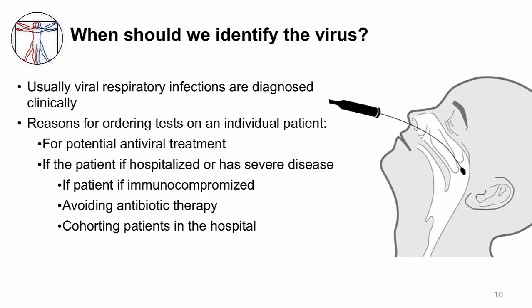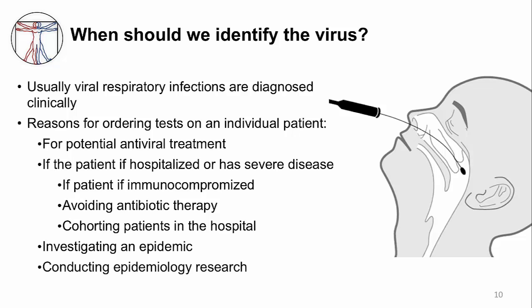A third main reason for identifying a virus is to investigate an epidemic of a respiratory virus. This is important in case the virus found is a new emerging virus. Studies are done on respiratory viruses — the only way we can know about the clinical syndromes and seasonality — and identifying viruses is crucial in these epidemiology studies.